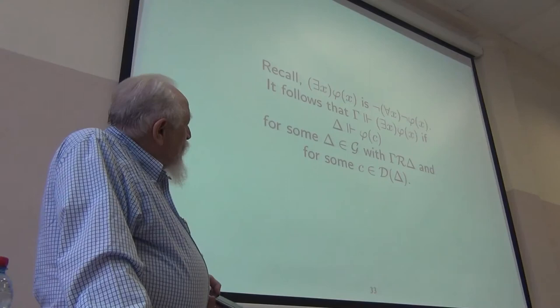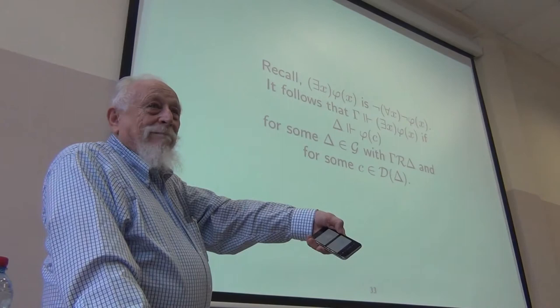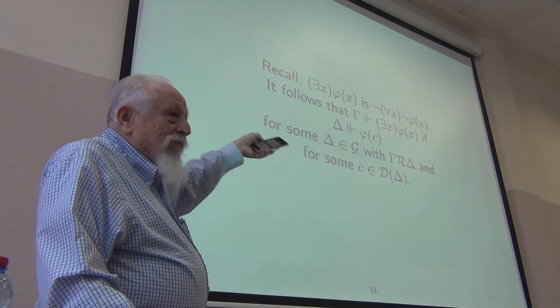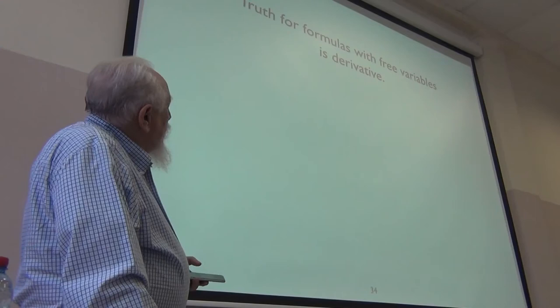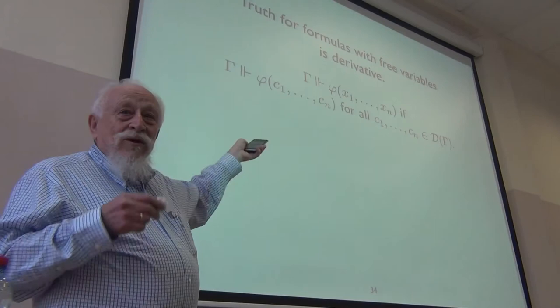I defined exists to be not-for-all-not, and what this gives you is: exists x phi(x) is true at gamma if there's some accessible world and something in the domain of that world such that the formula is true there. There are actually two existentials — some accessible world and something in that domain. Truth for formulas with free variables is a derivative notion: a formula with free variables is true at a world if each instance available at that world is true there.